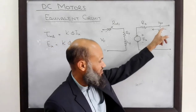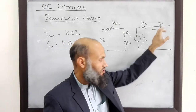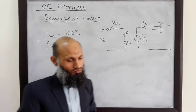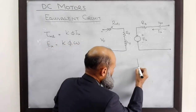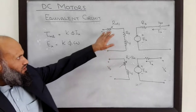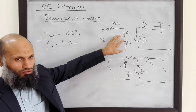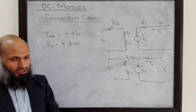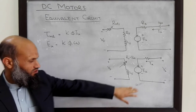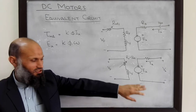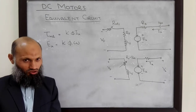Sometimes we can simplify this equivalent circuit by ignoring the small brush voltage drop. We can even lump the two resistances together to represent it by a single resistor. So, this is the simplified equivalent electrical circuit of a DC motor.